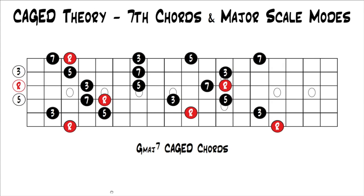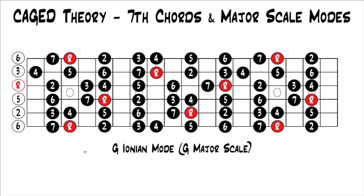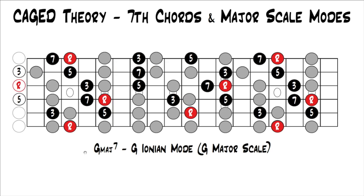On your screen right now are major seventh cage chords up and down the fretboard. I've put them in the key of G, and it starts lower on the fretboard — so these are all G major seventh cage chords. Major seventh cage chords work with two different modes. They'll work with the Ionian mode — this is G Ionian, which is the same thing as the G major scale. If we point out where the cage chords lie within the scale, all the ones in red or black are the intervals of the major seventh chords that fit with the cage chord shapes.